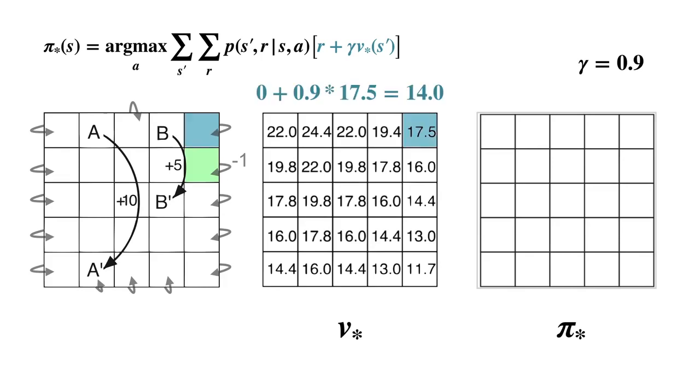The up action leads here, giving no reward and a next state value of 17.5. The sum of reward and discounted next state value is 14. The right action hits the wall, giving minus one reward and leaving the agent in the same state, which has a value of 16. The sum of reward and discounted next state value is 13.4.